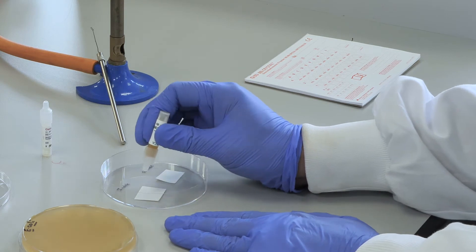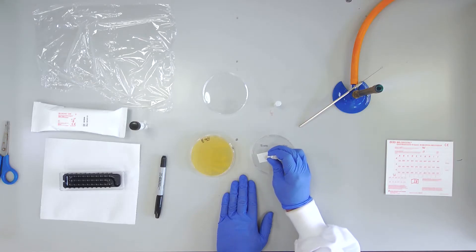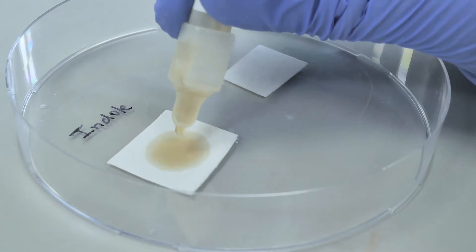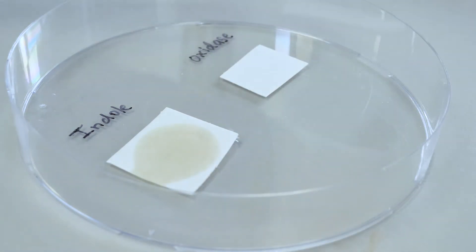In a petri dish containing two pieces of filter paper and a few drops of the Indole test vial on the centre of the first piece of paper.